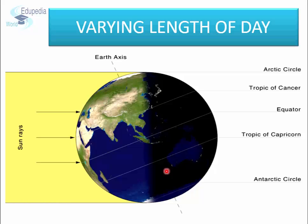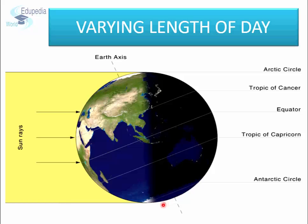On 21st June, the sun is directly overhead on the Tropic of Cancer. As you can notice in the diagram, all places in the northern hemisphere experience long days. In fact, on 21st June, all places in the northern hemisphere experience the longest day of the year. Even more interesting, places beyond the Arctic Circle experience 24 hours of daylight. On the other hand, places in the southern hemisphere experience the shortest day and the longest night. Places beyond the Antarctic Circle experience 24 hours of darkness.